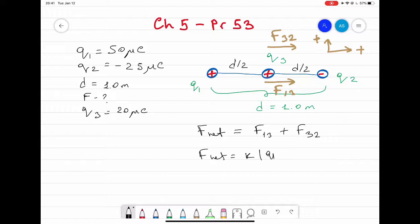Now f net equals k times the modulus of q1 times q3 divided by the distance between q1 and q3, which is basically d over 2, right? So d over 2 squared.